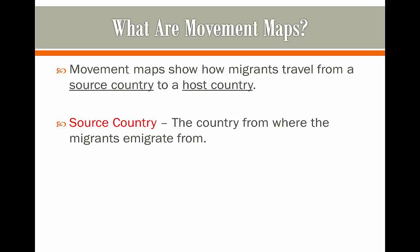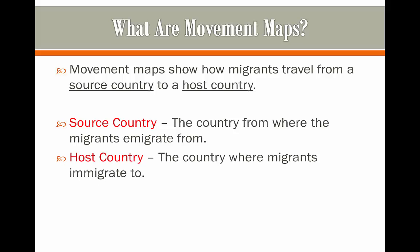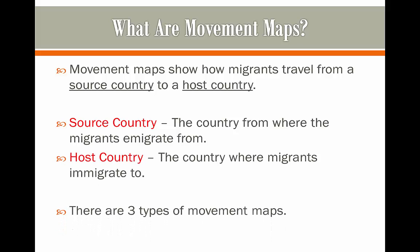The definition of a source country is a country from where the migrants emigrate from, and a host country is a country where the migrants are going to immigrate to. So for example, if we have migration coming from Poland to the UK, the source country will be Poland and the host country — the country that's going to be hosting all of the migrants — is the UK.